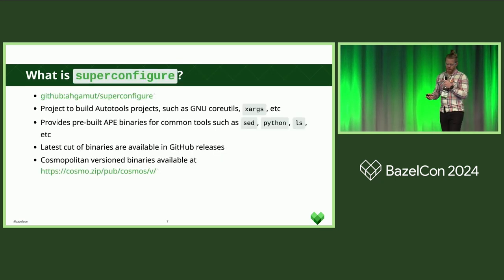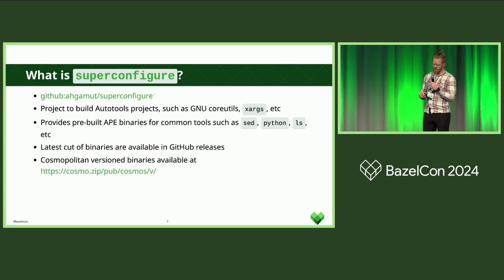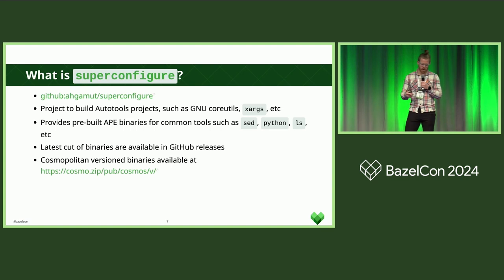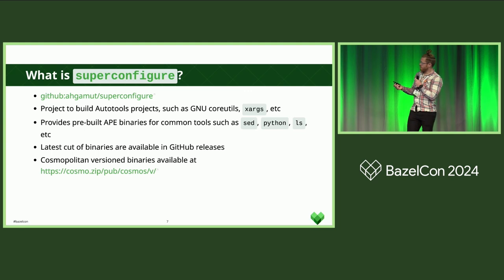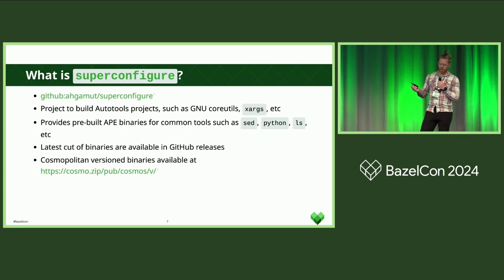As an extension of that, what is Superconfigure? Superconfigure is a wrapper around the Cosmo CC toolchain that brings all the benefits of autotools into the APE ecosystem. It is a project on GitHub that builds a lot of the common Unix tools. It also brings in Python, Git, and many other tools. Within that project they are doing regular GitHub releases with constant updates. Cosmopolitan is an active project, and it also versions its binaries on cosmo.zip.